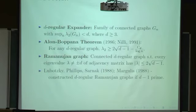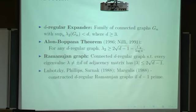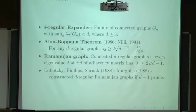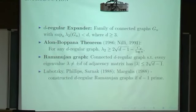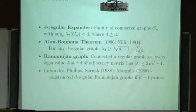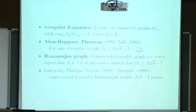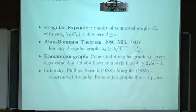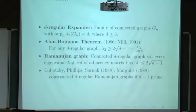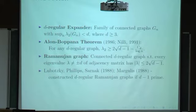The setup: we have a D-regular expander. What it means is that there is a uniform spectral gap. Lambda 2 here is not for the random walk but for the adjacency matrix — zeros for non-neighbors and ones for neighbors. This matrix has largest eigenvalue D, the degree, and the expansion property means that the second largest eigenvalue is separated from D.